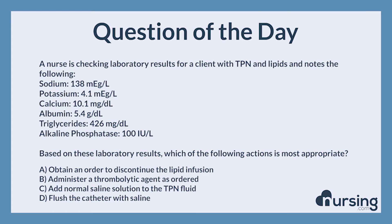The client in the scenario has high triglyceride levels, which is a potential complication of TPN administration with lipids. The first action of the nurse would be to discontinue the lipid infusion with the healthcare provider's permission and then monitor the triglyceride levels to see if they return to normal. This has been another episode of the Nursing.com NCLEX Question of the Day podcast.